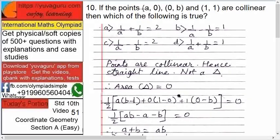Next, if the points (a, 0), (0, b), and (1, 1) are collinear, then which of the following is true? These are the four options given: a, b, c, and d. Important point is they are collinear. Collinear means what? If you draw a triangle with these three points, now listen to this carefully: points are collinear if you draw a triangle through these three points.